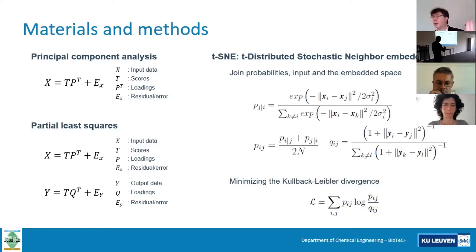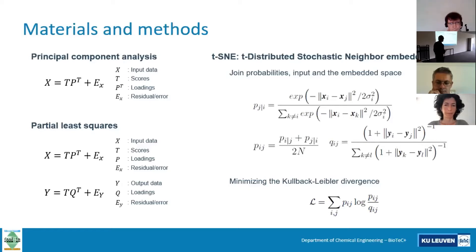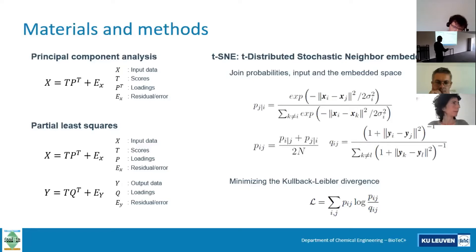PLS is a kind of extension of principal component analysis. Then we have a more recent tool for data visualization and dimensionality reduction called t-SNE. Basically this method is similar to PCA — the objective is to find a reduced space where we can visualize clusters or trends from the original large space of properties. It is based on joint probabilities: we express joint probabilities in the input space and the reduced space, and we minimize the difference between them — what is called the Kullback-Leibler divergence — to find an optimal expression of the data in the reduced space.